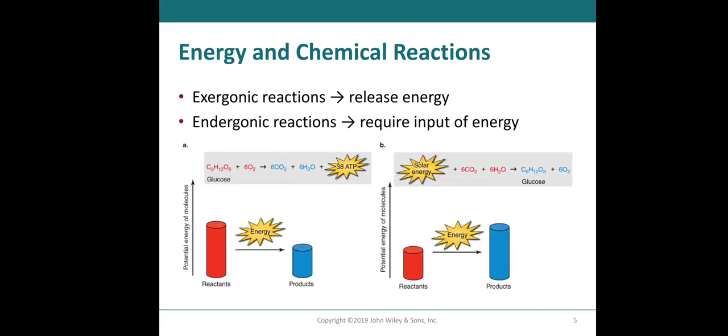In a schematic way that we can visualize them, here we have on the left an exergonic reaction. Why is this exergonic? Because if you look at the energy in your reactants versus the energy in your products, your reactants have a higher amount of energy than your products. Since you cannot destroy energy, what happens? The energy was released in the form of ATP.